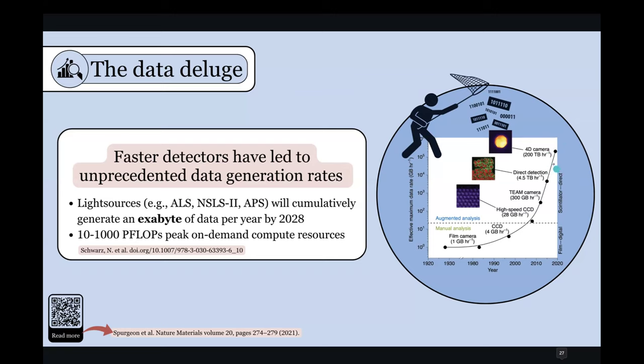And so this is not just a problem at microscopy facilities. It's also a problem at light sources, where these detectors are being installed at ALS, NSLS-2, and APS. And these facilities will be projected to cumulatively generate an exabyte of data per year by 2028. So this is not only going to require some kind of special way of managing this data, but also really centralized compute and on-demand compute for that data to be processed and return back to the user in a timely manner.